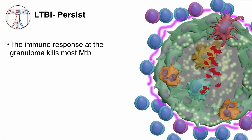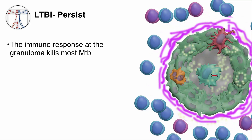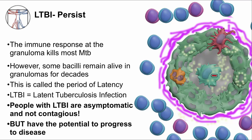However, some bacilli remain alive within granulomas, sometimes for decades. During this period, the person is asymptomatic but still infected with MTB, and we call this phase of TB infection latent TB infection, or LTBI. People with latent TB infection are not contagious, but importantly, they have the potential to progress to active TB disease, which will induce symptoms in that person.